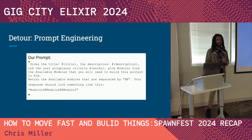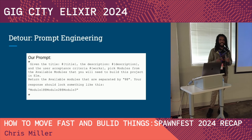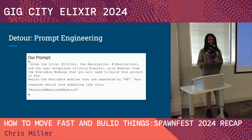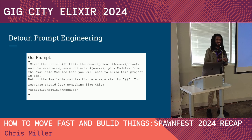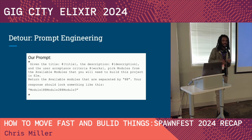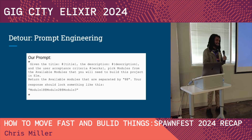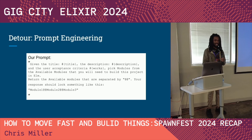This is the final prompt we landed on: given the title, description, and user acceptance criteria, pick modules from the available modules that you need to build this project in Elm. Return the available modules separated by double ampersand, and your response should look something like this. This was perfect — it was giving us everything we needed.